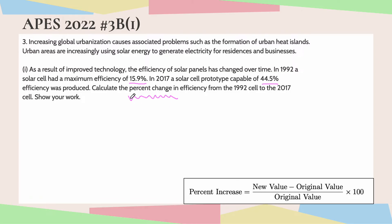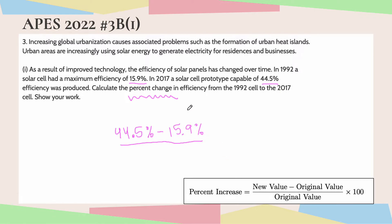So clearly this is a percent change problem. I have included the formula down in the bottom right — that is available on my formula sheet on Patreon, just as a quick reminder. The new value is 44.5%, and the original value is 15.9%. We take that difference, divide it by the original value of 15.9%, and multiply by 100. Plugging that into my calculator, I got 179.9% — that is the percent change in efficiency of the solar cells from 1992 to 2017.